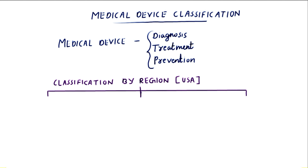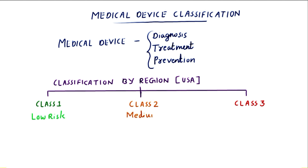There are three different classifications of medical devices: Class 1, Class 2, and Class 3 devices. Class 1 devices are low risk devices, Class 2 devices are medium risk when used in the patient, and Class 3 are high risk devices. Out of 1,700 classifications, nearly 47% of medical devices fall under Class 1, 44% are under Class 2, and the remaining 9% of medical devices are Class 3.